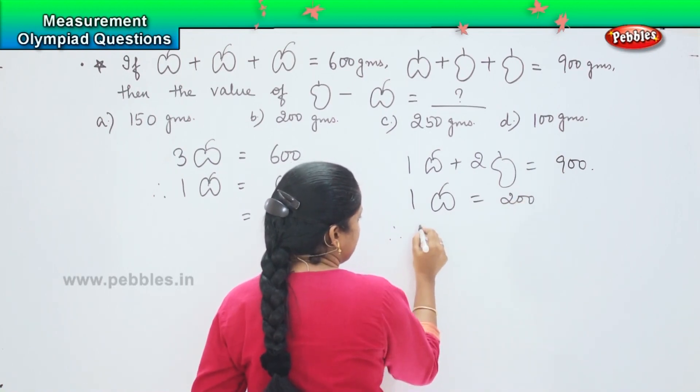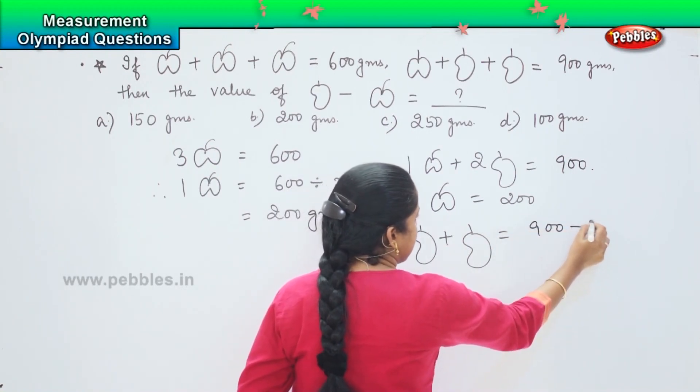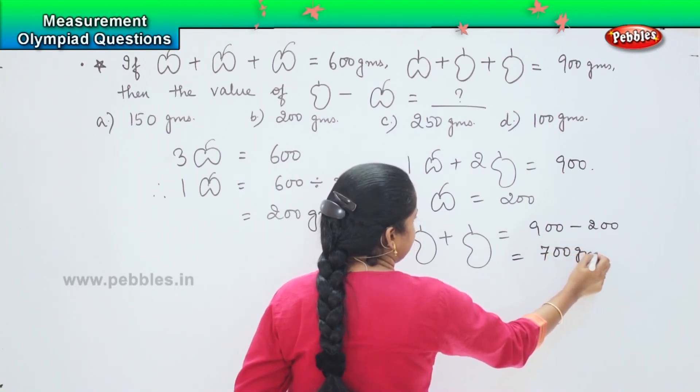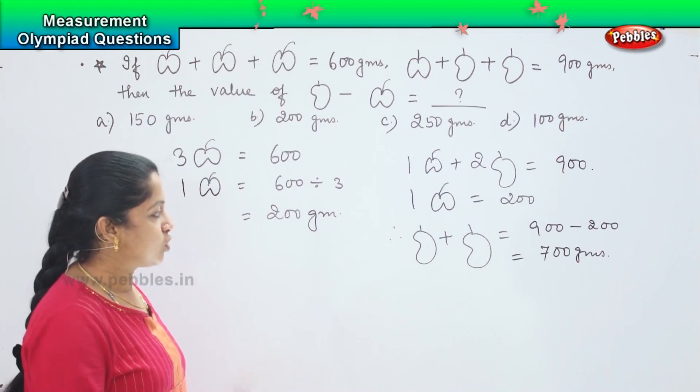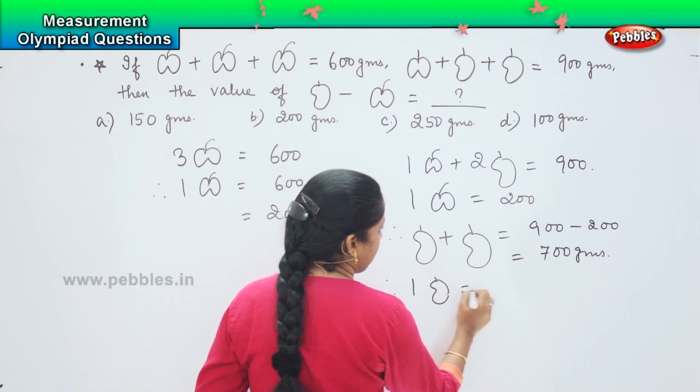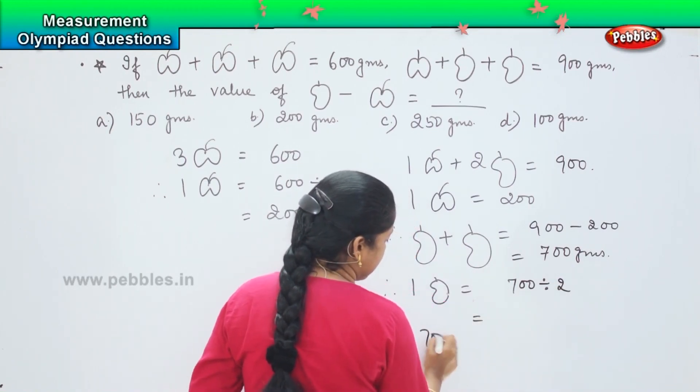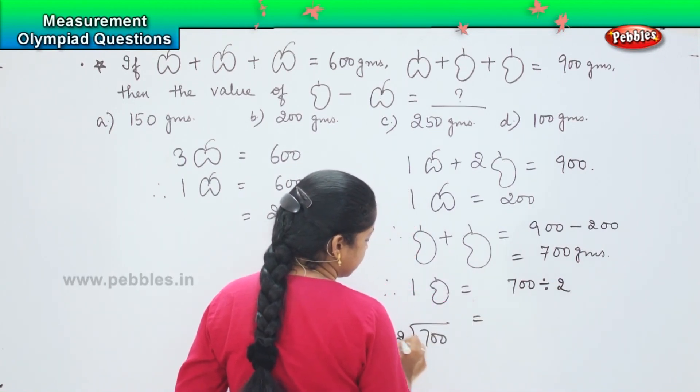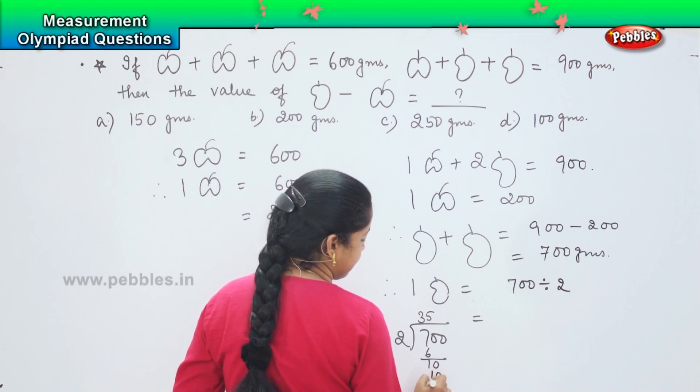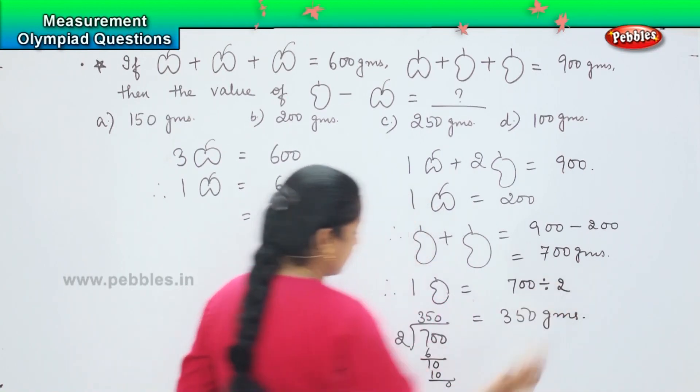Therefore, the value of two mangoes is equal to how much? 900 minus 200 which equals 700 grams. So two mangoes will be how much? 700 divided by 2. So 700 divided by 2, two threes are 6, two fives are 10, and 0 which equals 350 grams.